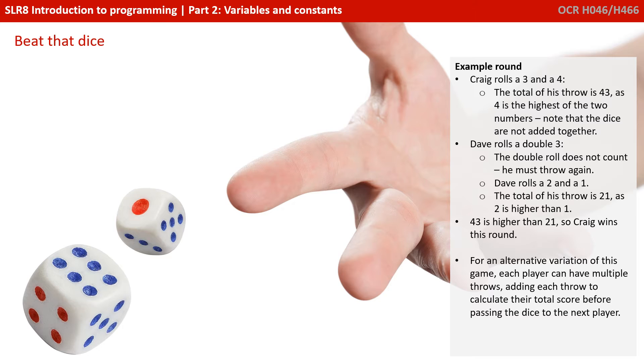So let's just do a quick example round. Craig rolls a 3 and a 4. The total of his throw is 43, because 4 is the highest of the two numbers. Note the dice are not added together, so it's not 4 plus 3 is 7, it's 43. Dave then rolls a 3 and a 3. The roll doesn't count as it's a double, so he throws again. He rolls 2 and 1. The highest dice goes first, so he gets 21.